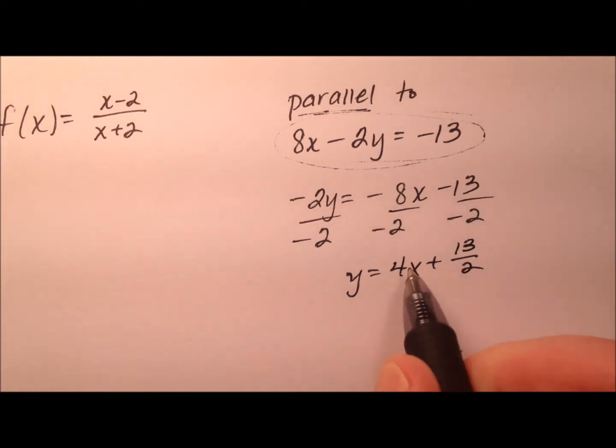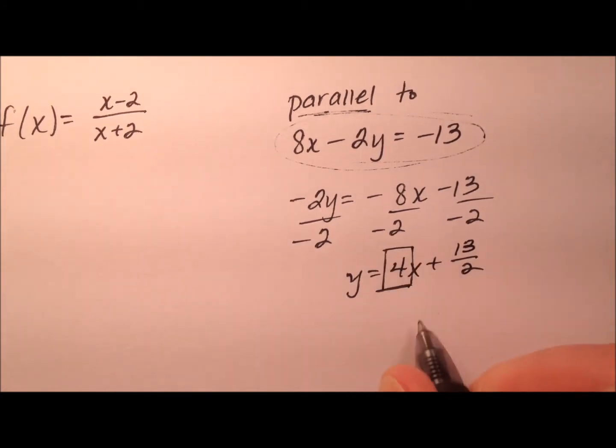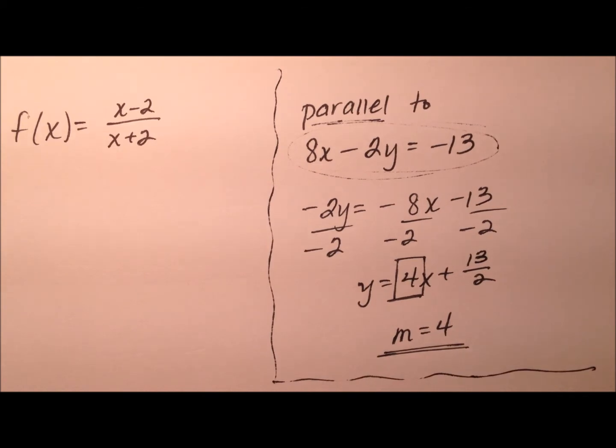Now, of course, I don't really care about the 13 halves, but I do care about this 4. So the slope equals 4. And that's the big thing that I need to start with.